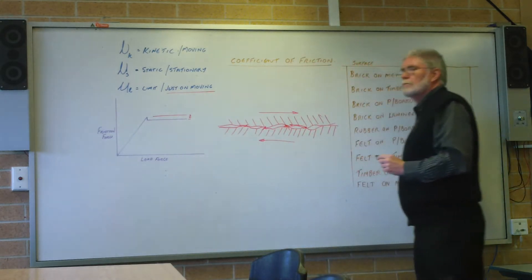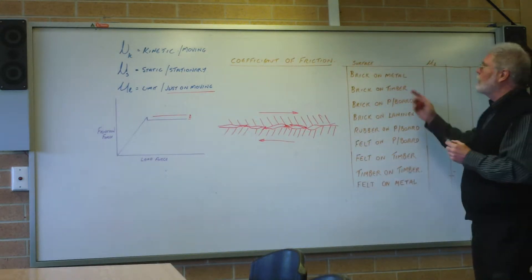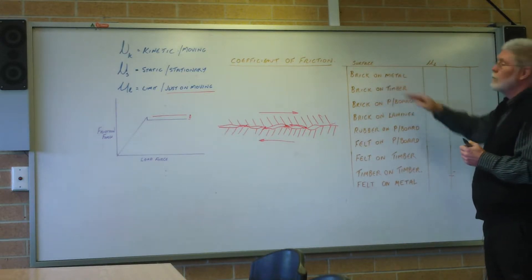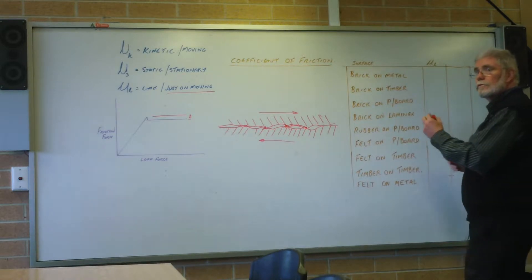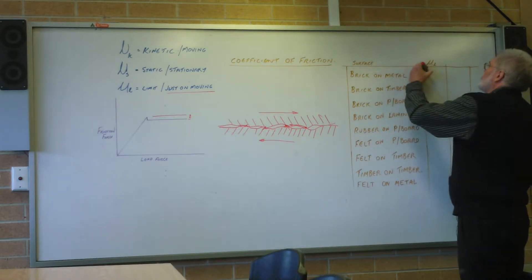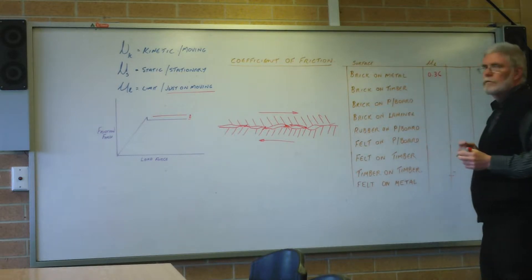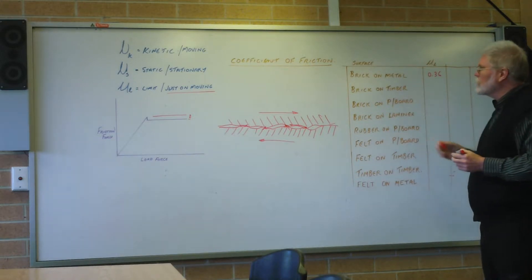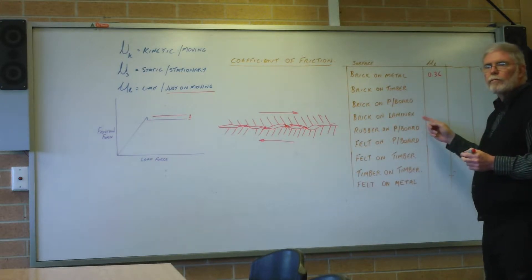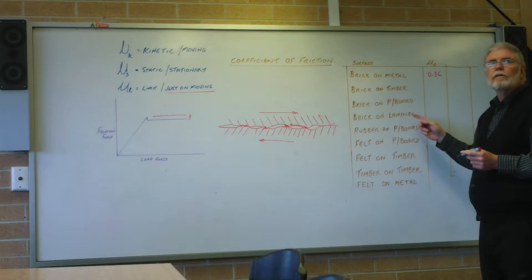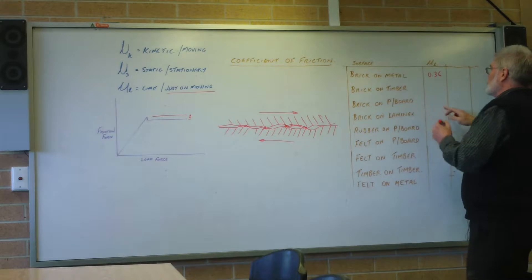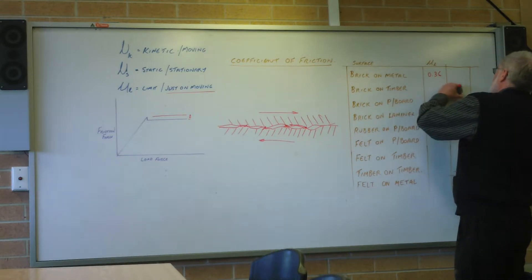Let's have a look at some of the things we did. If we've got two of them, I'll put both up and we'll see. Brick on metal - who had that? 0.36. Brick on timber, have a quick look through the list. Brick on particle board - what'd you get? 0.46. Two different values, two different surfaces.